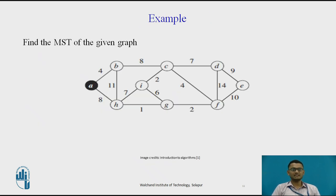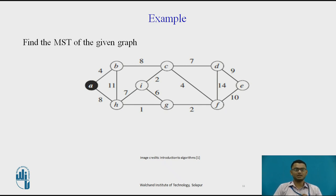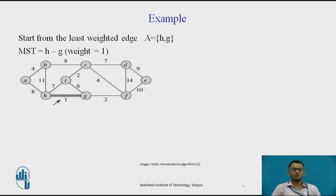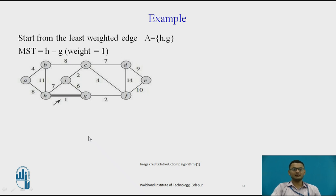This is an example of finding the MST of a given graph using Kruskal's algorithm. There is an undirected weighted graph given, and step by step we shall find out the MST using Kruskal's algorithm. As we have seen in the steps, we sort all the edges according to increasing order and select the minimum weighted edge first.